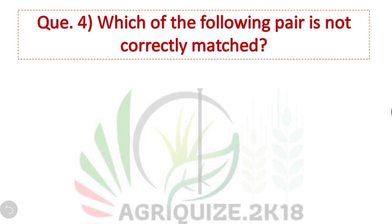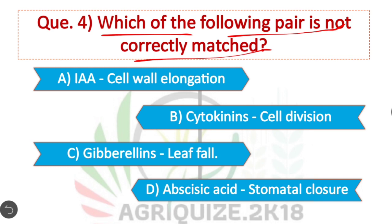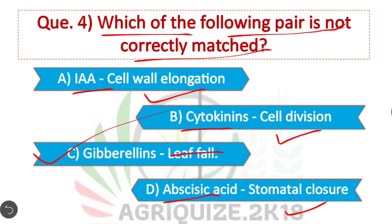Question 4: Which of the following pairs is not correctly matched? Option C is correct. Gibberellin causes stem elongation or internode elongation, not lip growth. The other three options — Indole-3-acetic acid causing cell elongation, cytokinin causing cell division, and cytokinin causing stem elongation — are correct. Gibberellin does not cause lip balm, that's why option C is correct.